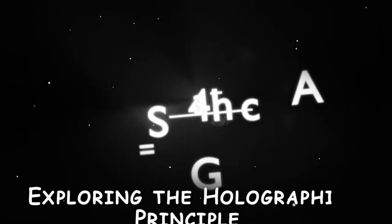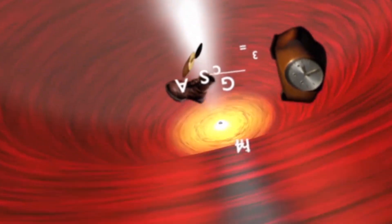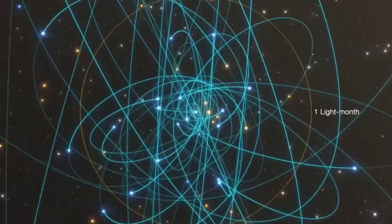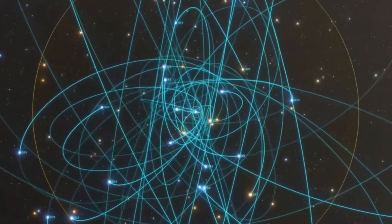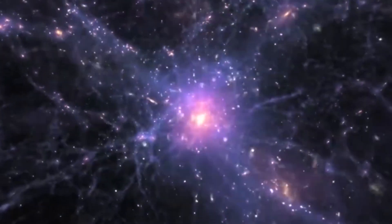The holographic principle posits that all the information within a three-dimensional space can be encoded onto its two-dimensional boundary. Applying this concept to black holes, Kaku suggests that our entire universe, with its three spatial dimensions, might be a projection arising from interactions within the event horizon of a higher dimensional black hole.